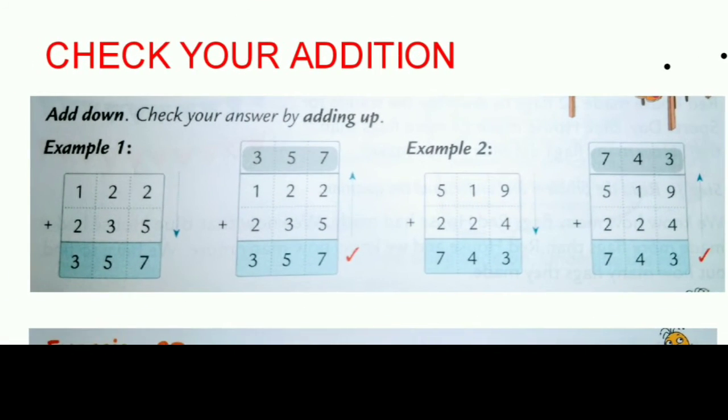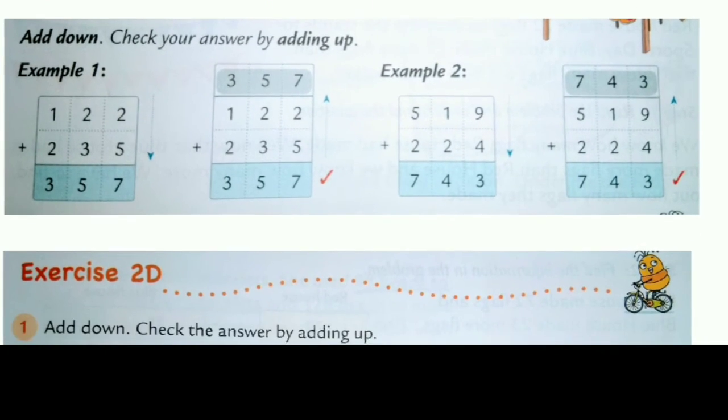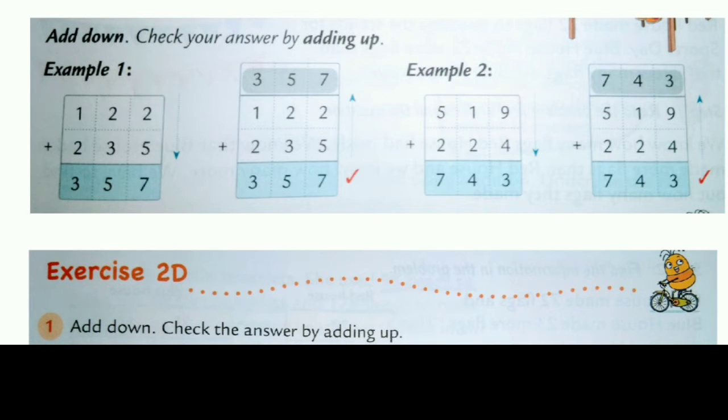See here one example. Check your answer by adding up. So first what we will do here? Simple addition we will do. 5 plus 2 is 7, 2 plus 3 is 5, and 1 plus 2 is 3. This we have done. After that the same thing we will do but we will check our answer and we will write all the answers up like this. Same answer we get. We will write as up.